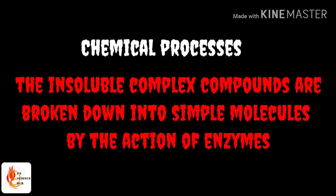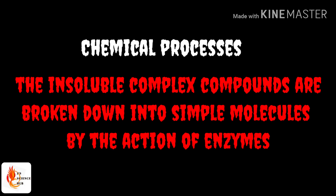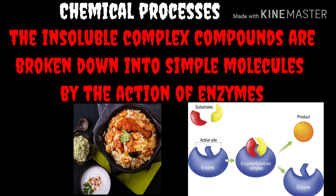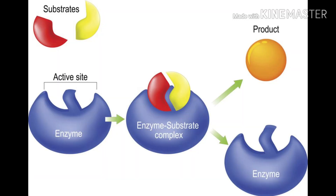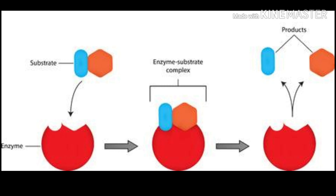Inside the stomach, mechanical digestion also takes place. During chemical digestion, the composition of the food is changed — the complex food particles are converted into simple food particles. In brief, during the chemical process, insoluble complex compounds are broken down into simple molecules by the action of enzymes. Enzymes are globular proteins; they increase the rate of reaction. There are different enzymes engaged in the process of digestion.